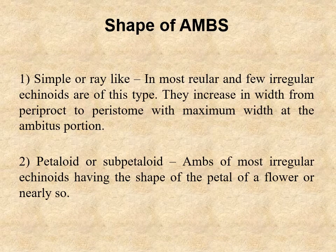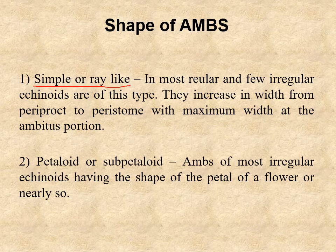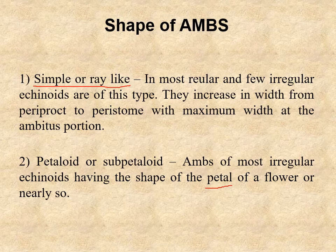Regarding the shape of amps: generally the ambulacral region has a simple ray-like shape found in most regular echinoids and some irregular echinoids, increasing in width from periproct to peristome with maximum width at the ambulacral portion — these are called simple or ray-like amps. In contrast, in some echinoids — particularly the most irregular ones — the amps look like a petal structure resembling flower petals. This kind of amp shape is known as petaloid or subpetaloid.